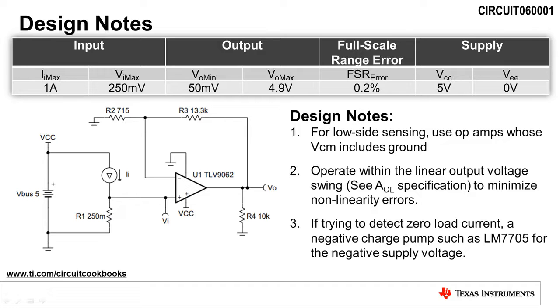Finally, if you're trying to detect a load current of 0 amps, you can use a negative charge pump, like the LM7705, for your negative supply voltage.